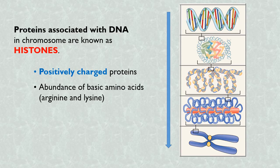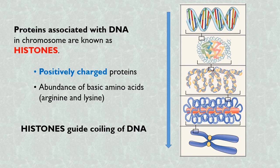Now, how is this information useful to us? We know that DNA molecules are negatively charged because of phosphate groups. Histones being positively charged are strongly attracted to the DNA molecule. Histones guide the coiling of DNA.